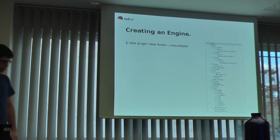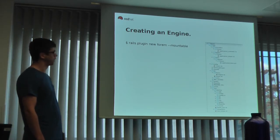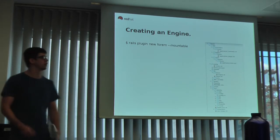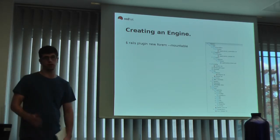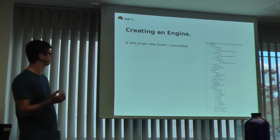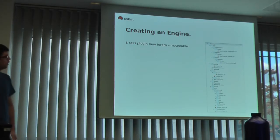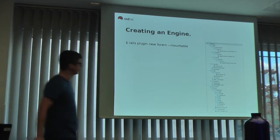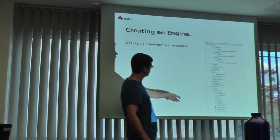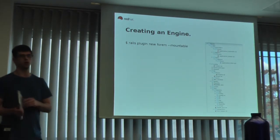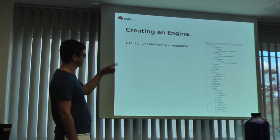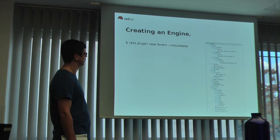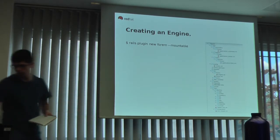To create an engine, you're essentially creating a Rails plugin, but a particular type — by passing the mountable parameter you tell the plugin generator to create a Rails engine. A Rails engine looks pretty much exactly the same in layout as a Rails application, so all the code is the same. There are a few extra things inside there, like the test dummy application, which I'll get to in a second.